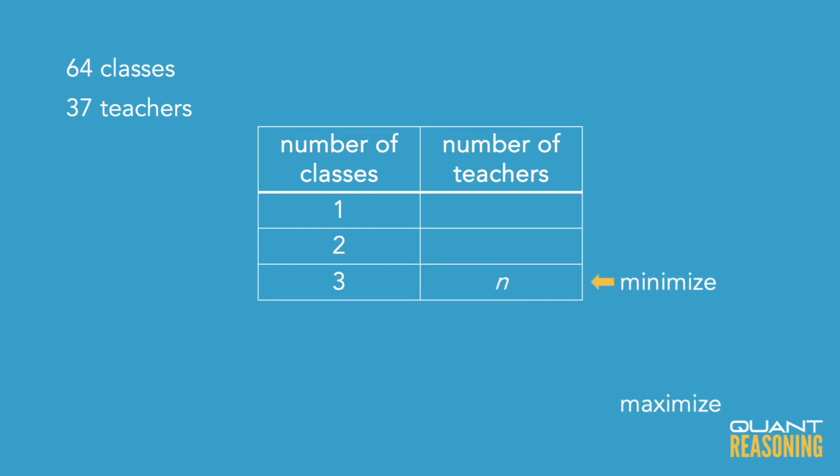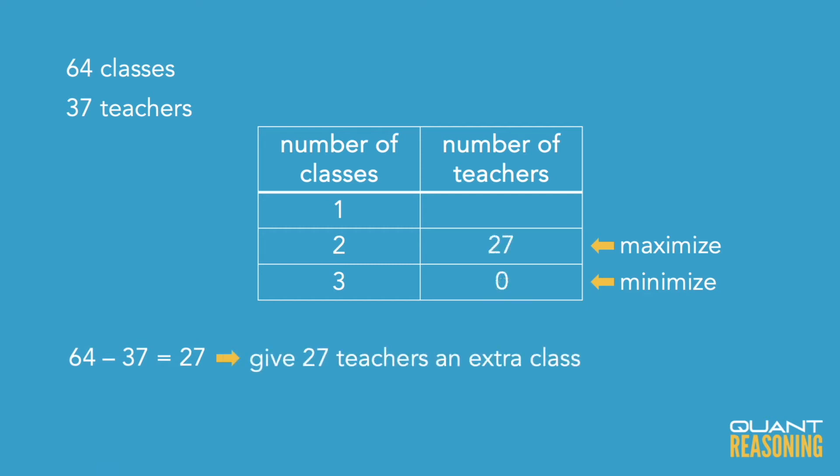Just for our purposes, let's solve this all the way. The other extreme scenario is where as many teachers as possible get two classes, so that as few teachers as possible get three classes. Is it possible to take the remaining 27 classes and just give them one each to 27 of the 37 teachers? Yes, absolutely. You'd have 37 teachers that get one class each — that's spoken for. The remaining 27 classes you give one each to 27 teachers, and the remaining 10 teachers only have one class. In that scenario, nobody gets three classes, and the value of N there would be zero. So again, the correct answer is A.